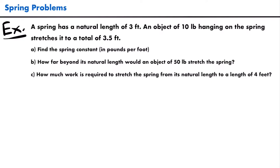In this example, a spring has a natural length of 3 feet. An object of 10 pounds hanging on the spring stretches it to a total of 3.5 feet. We have three parts: Part A, find the spring constant in pounds per foot; Part B, how far beyond its natural length would an object of 50 pounds stretch the spring; Part C, how much work is required to stretch the spring from its natural length to a length of 4 feet.